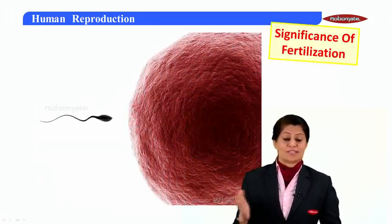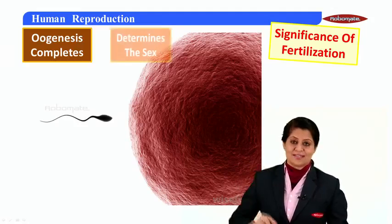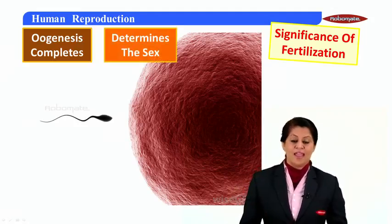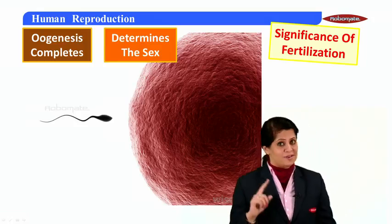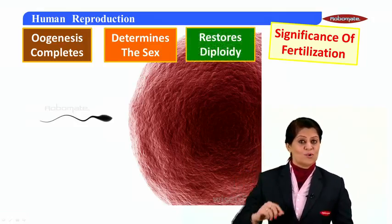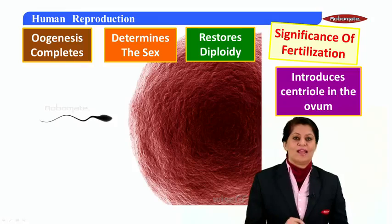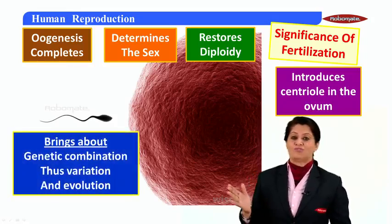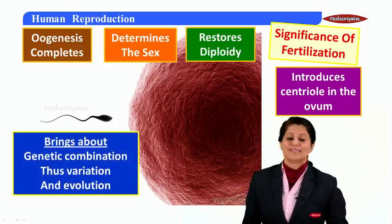Now let's look at the significance of fertilization. Fertilization completes oogenesis. It also determines the gender of the baby — if the sperm carrying the X chromosome fuses, it's a baby girl; if it carries the Y chromosome, it's a baby boy. It also restores diploidy. Fertilization introduces the proximal centriole into the ovum. It also brings about genetic recombination, leading to variation and the most important process — evolution.